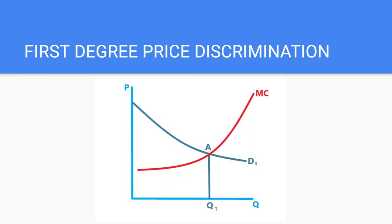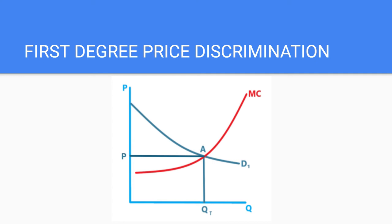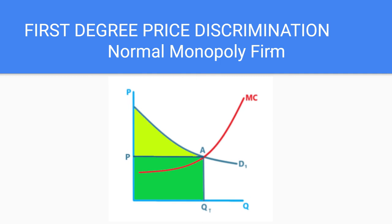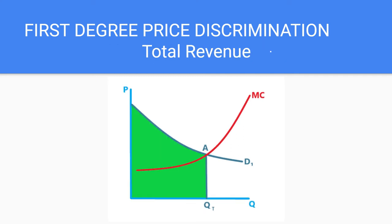In the diagram for first degree price discrimination, D1 is the demand curve and MC is the monopolist's marginal cost. In a price discriminating monopoly, the marginal revenue is the same as the demand curve. The profit maximizing output is at QT where MC meets MR, and the price is determined at the point where the profit maximizing output is extended to the demand curve. For a normal monopoly firm not discriminating its price, there is a defined total revenue area and a consumer surplus. But for a first degree price discriminating monopoly firm, the entire area under the demand curve becomes total revenue and there is no consumer surplus, because the monopolist sells to each buyer exactly what they are willing to pay.